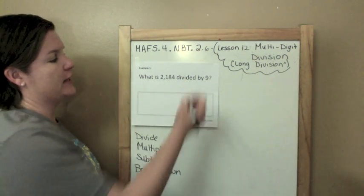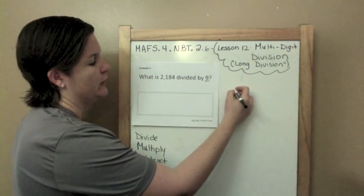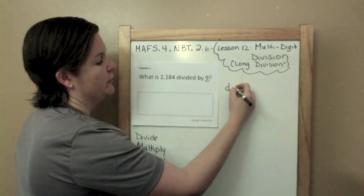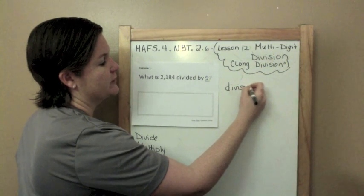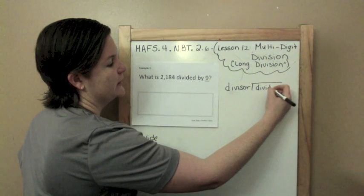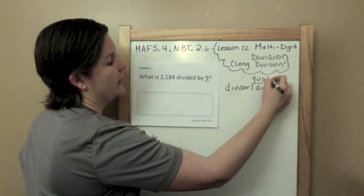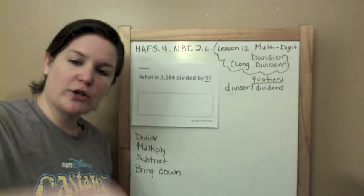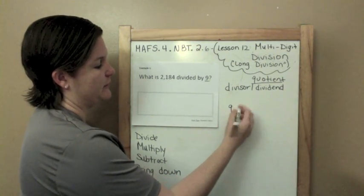Example one: What is 2,184 divided by 9? Nine is going to be our divisor. Our divisor goes on the outside. We have our dividend inside, and our quotient is going to be our answer that we solve. If we use any of these terms, this is where the placement is for long division. So my divisor is going to go on the outside, that's my 9. On the inside I'm going to put my dividend, that's 2,184.